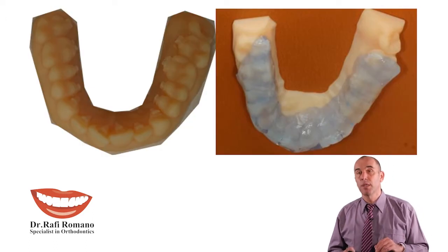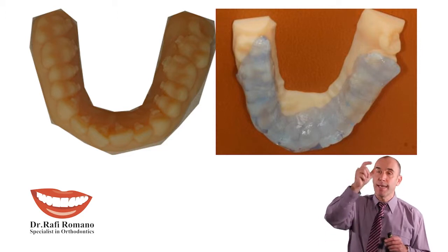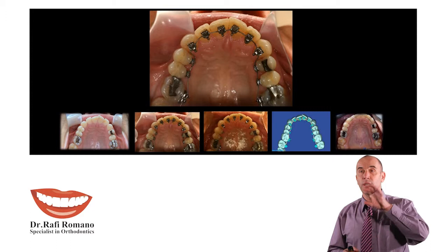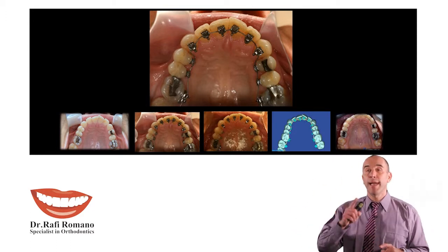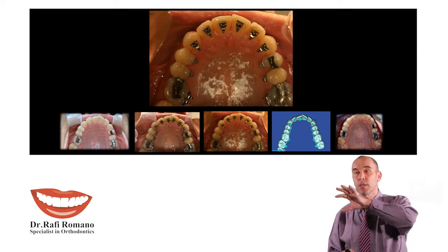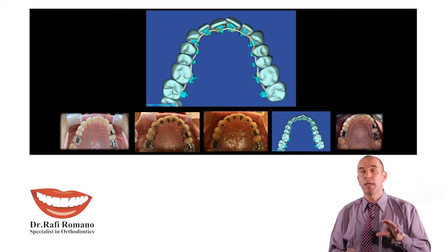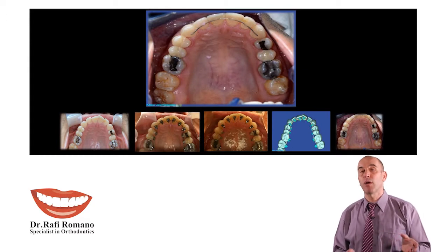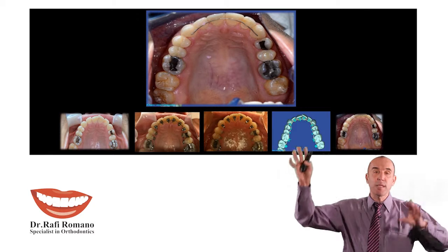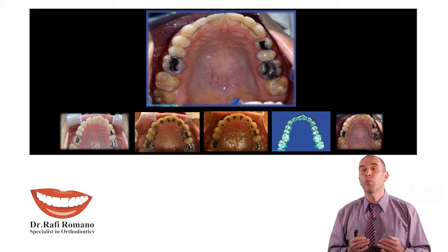Once the virtual setup is complete — without bonding any bracket yet — I export it to a 3D printed model. You can see the before and after; the virtual brackets appear on the printed model. I prepare the tray, move it into the mouth. Here is the case before, and here is the case after placing brackets that were virtually positioned on the computer, followed by a preformed nickel-titanium wire. After about two months, we do the scanning — you can see alignment has already started — then we plan on SureSmile software and insert the computerized wire. This case finished in around four months, which is not usual for lingual orthodontics.